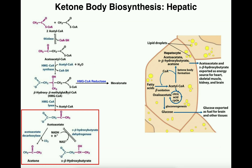HMG CoA has a number of metabolic fates, both of which actually occur in the liver depending on whether it's in a fasting or fed state. If we're in a fed state with plenty of energy — no need to produce many ketone bodies — the reaction of choice is HMG CoA reductase. This converts HMG CoA into mevalonate, which is the committed step in cholesterol biosynthesis, among other products such as vitamin D and coenzyme Q.